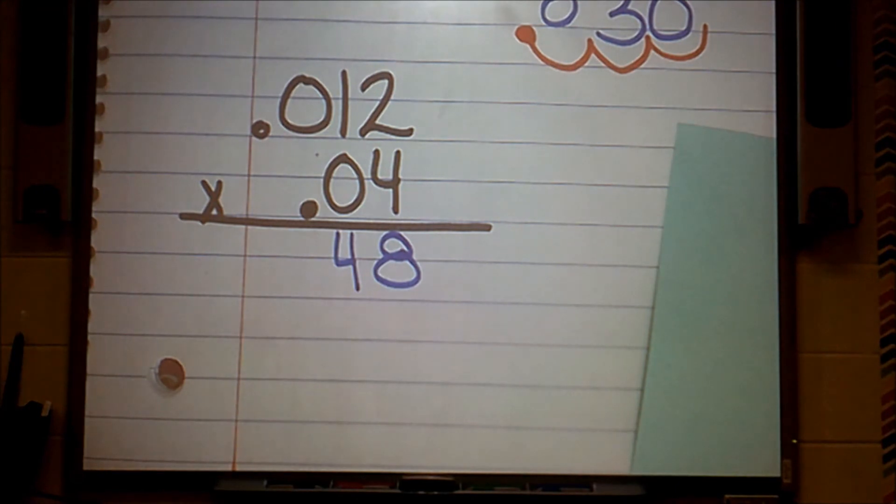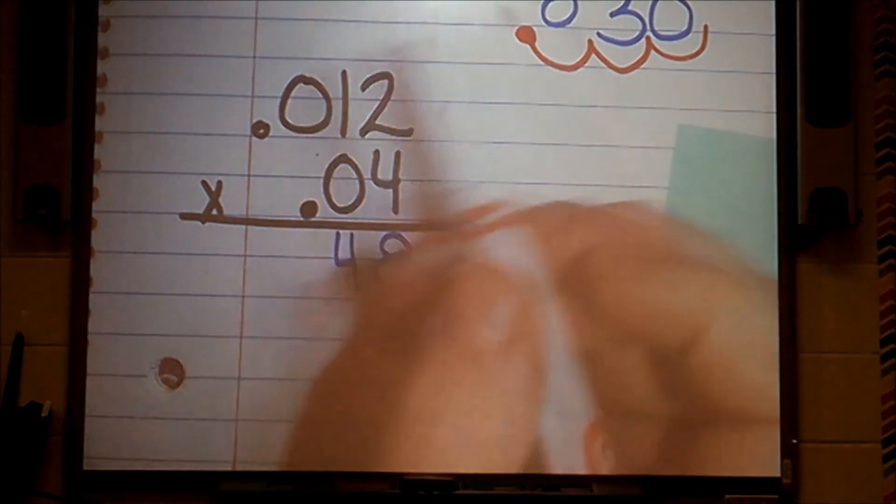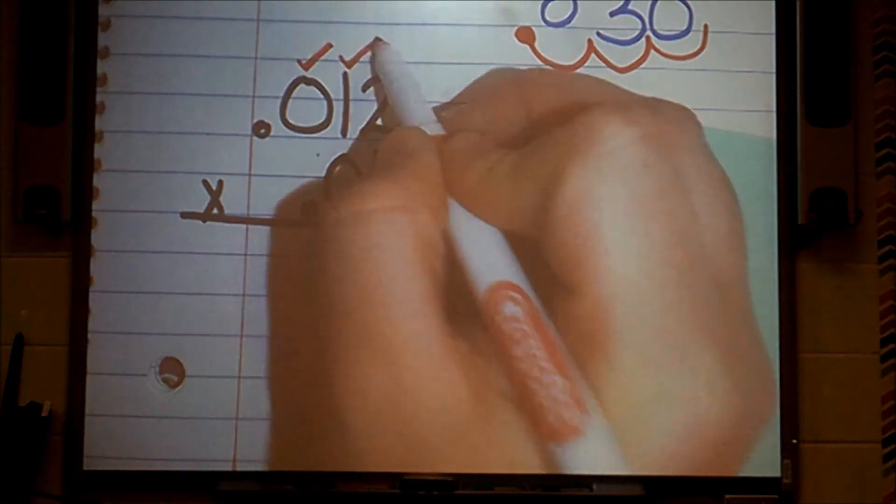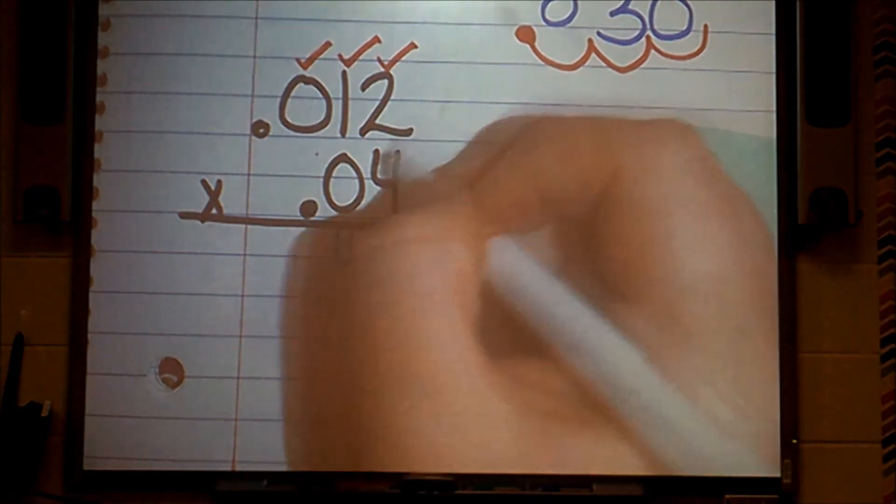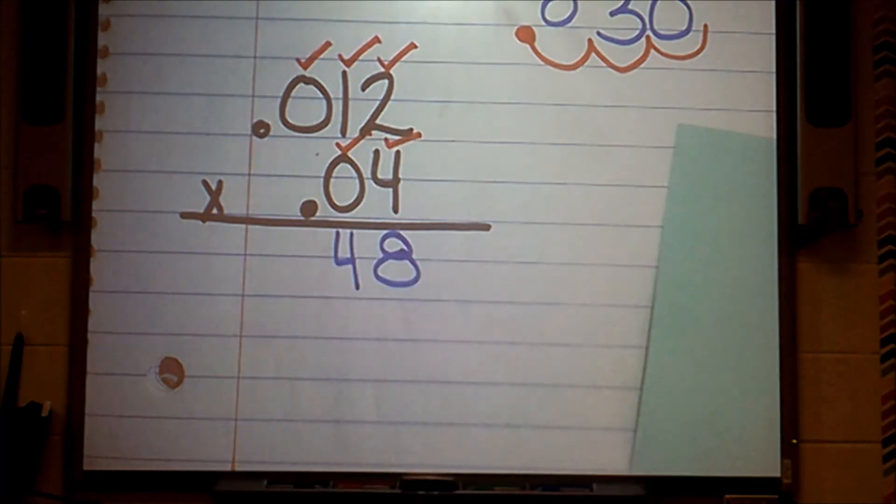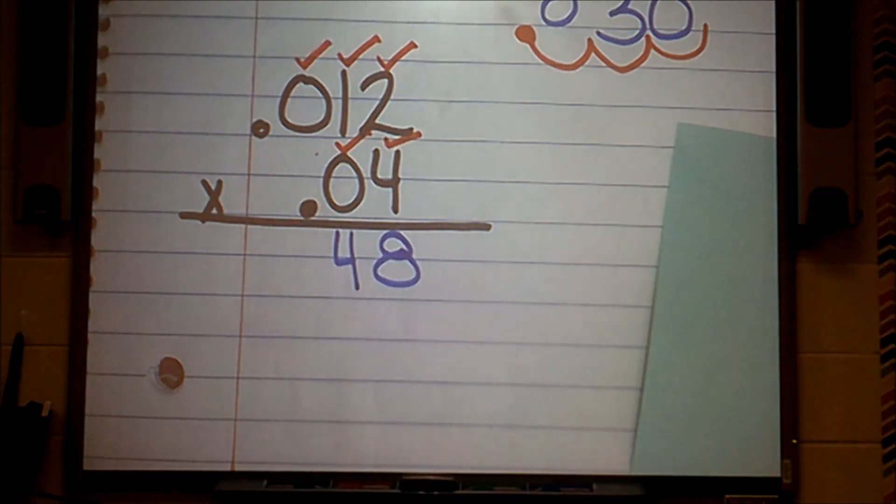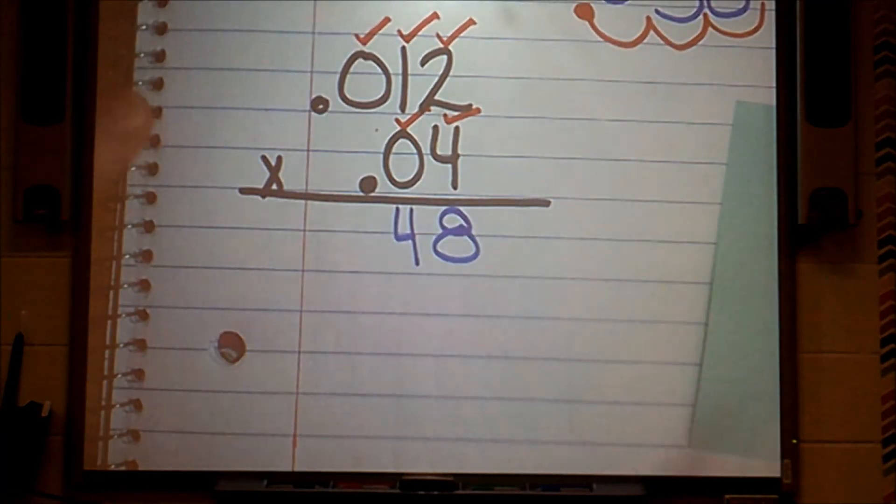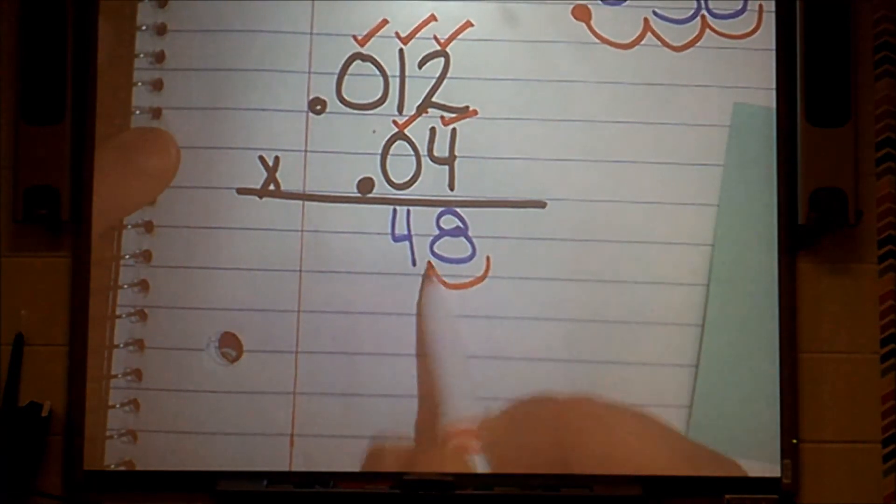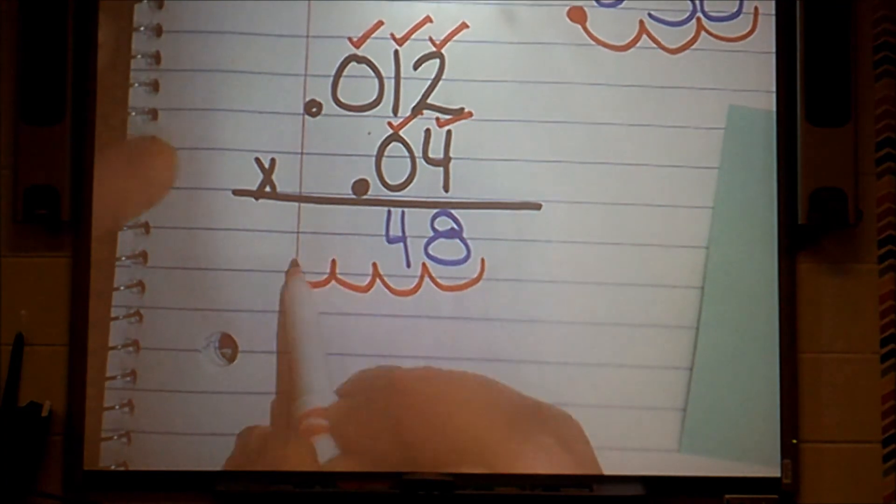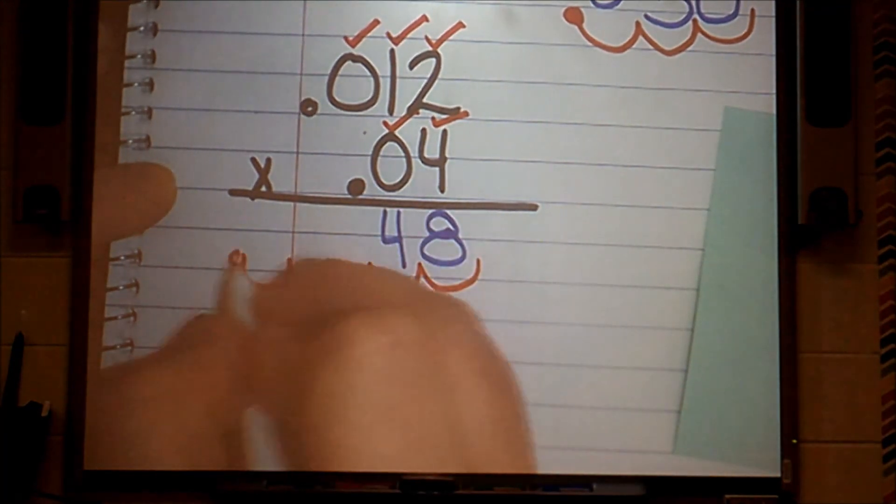Now I count the number of place values behind the decimal in the original problem. I have one, two, three, four, five. Whoa. Five digits behind the decimal. We're going to be doing some bumping here, guys. Ready? One, two, three, four, five. Decimal.